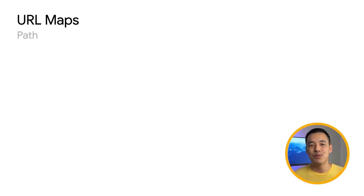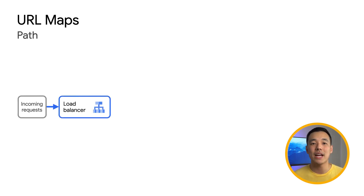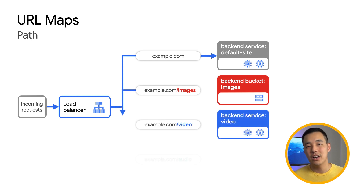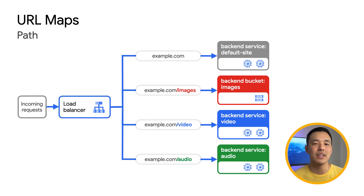We'll kick off this video discussing new features available for both internal and external HTTPS load balancers. This feature enables you to test URL maps that have already been deployed. A URL map is a configuration resource that routes requests to back-end services or back-end buckets. For example, example.com/video can go to one back-end service, example.com/audio can go to a different back-end service, and example.com/images can go to a Cloud Storage back-end bucket.